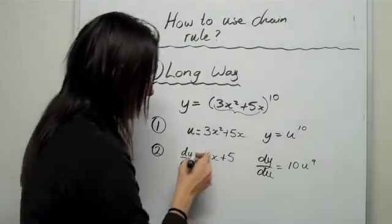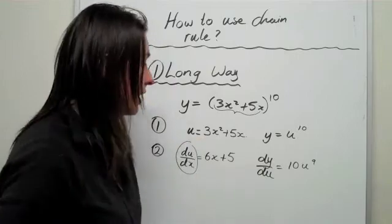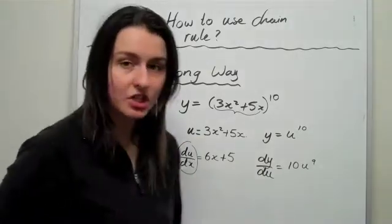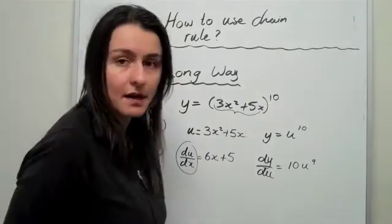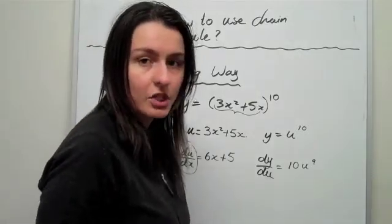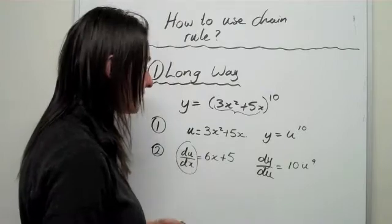We've got dy over du equals to 10 u to the power of 9. So, these are called differentials. And what they actually help you to do is, you can now set up some expression, which actually gets you to find the derivative.